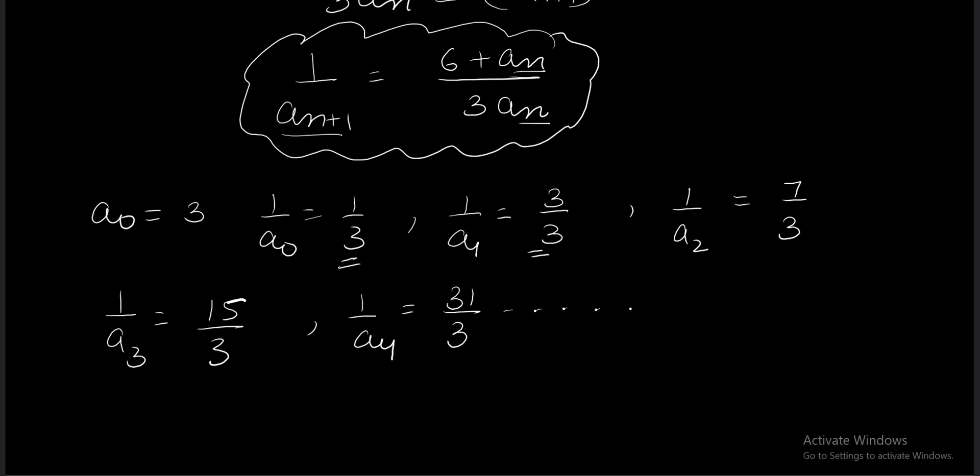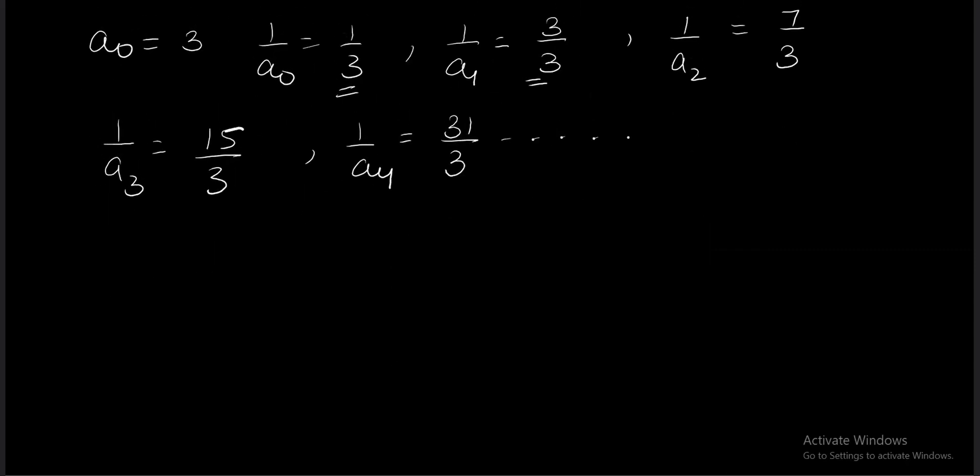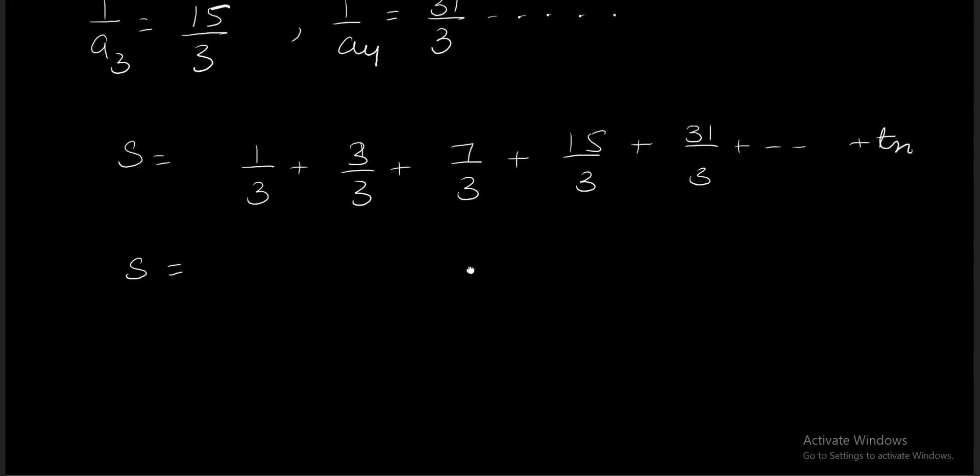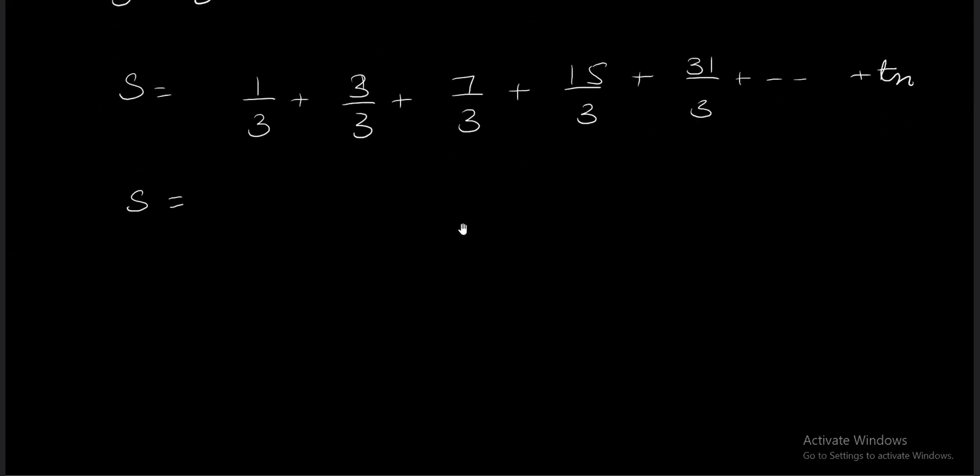The series continues. To generalize and find the nth term, we usually write the series as: 1/a0 + 1/a1 + 1/a2 + 1/a3 + 1/a4 + ... + t_n. Now I'm using the method of difference approach. You rewrite the entire series by shifting each term, so the last term becomes t_n. Then subtract the two series.